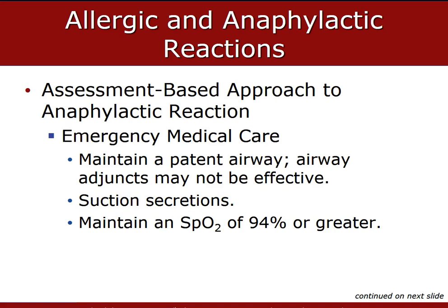Maintain a patent airway. The patient might initially present with airway compromise associated with swelling of the tissues lining the larynx. Since airway adjuncts are not effective in managing this obstruction, you might need to force air past the swollen tissues by positive pressure ventilation. If using a bag valve mask device, you might find it much harder to compress the bag. Suction any secretions — in a severe anaphylactic reaction, heavy secretions can be present. Clear the mouth by suction when necessary. Maintain adequate oxygenation, and a high concentration of oxygen should be administered by non-rebreather mask to maintain an SpO2 of 94% or greater and to eliminate signs of hypoxia.